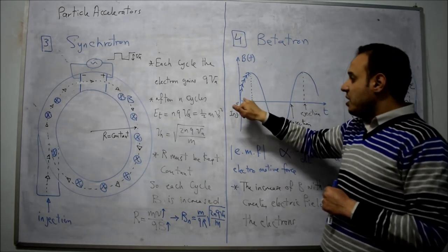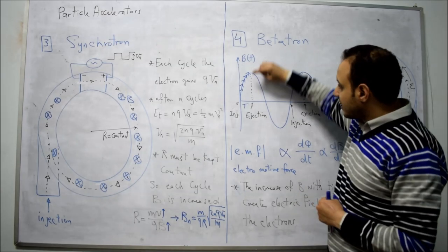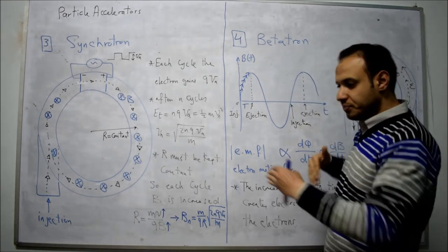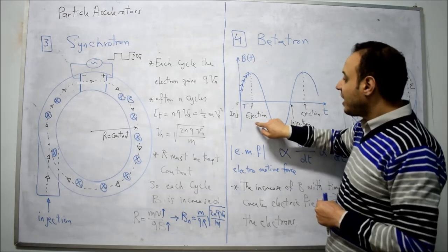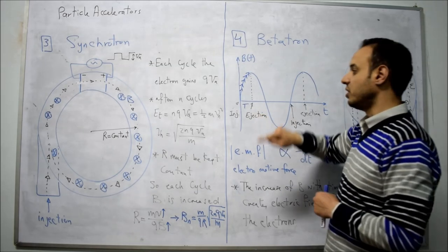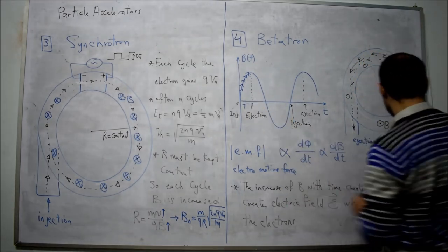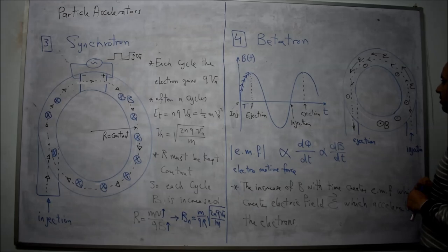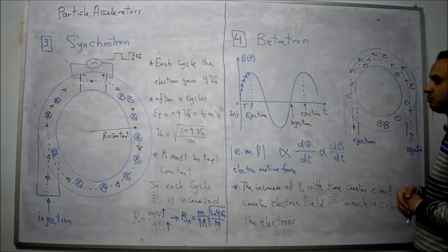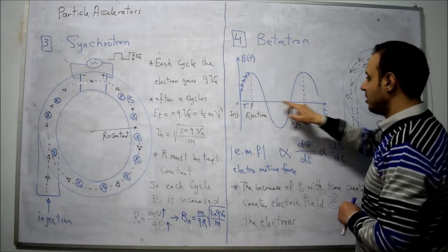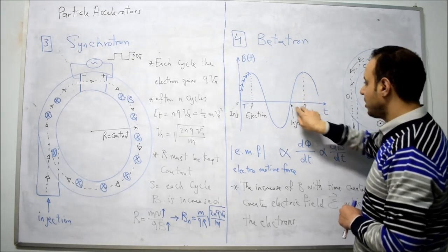We have a problem. If I make injection at one point, B will be increasing and the EMF will be increasing, accelerating the electron. But at another point in the cycle, the magnetic field will be decreasing, which would decelerate the electron. So I must make ejection for the electrons at that point before the field decreases. I inject electrons at one point and must eject them at another. After some time T, I eject the electrons. There is no ejection during the decreasing phase. At the second cycle, I make another injection, and after another T, I make another ejection.